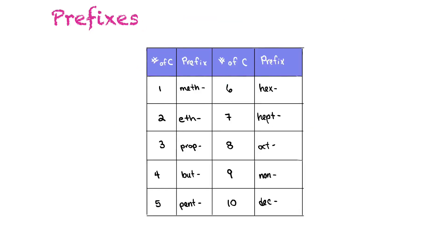To help us name hydrocarbons, we need to understand the numerical prefixes. One is meth, two is eth, three is prop, four is but, five is pent, six is hex, seven is hept, eight is oct, nine is non, and ten is dec. These will come in handy throughout our entire organic chemistry unit.